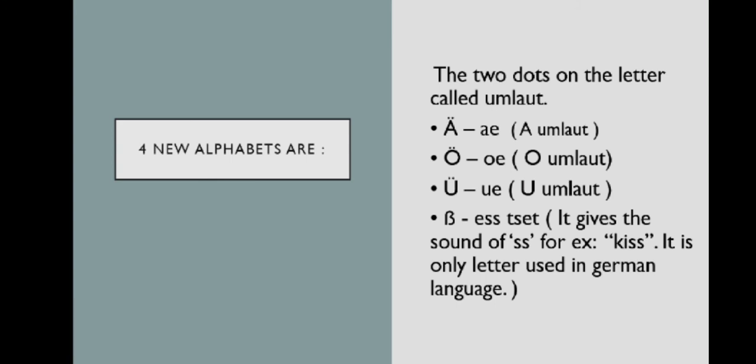The second alphabet is O umlaut and the pronunciation of this alphabet is OI. The third alphabet is U umlaut and the pronunciation of this alphabet is U.